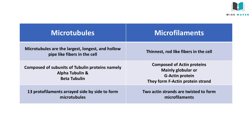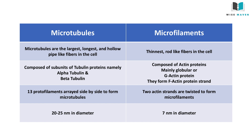13 protofilaments are arranged side by side to form microtubules, whereas two F-actin strands are twisted to form microfilaments. Microtubules have a diameter of 20 to 25 nanometers and their inner diameter will be 12 nanometers, whereas microfilaments have a diameter of 7 nanometers.